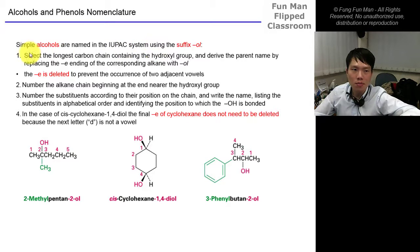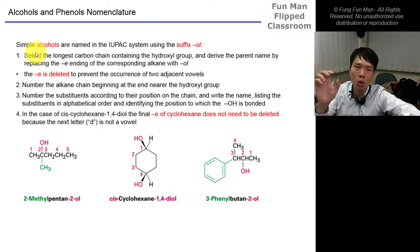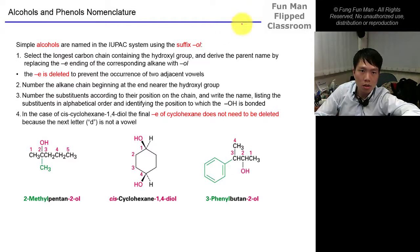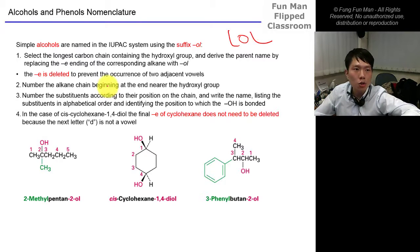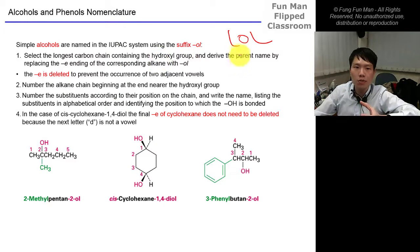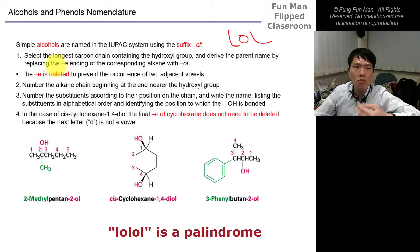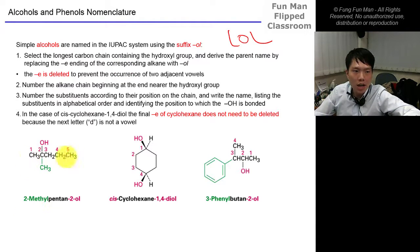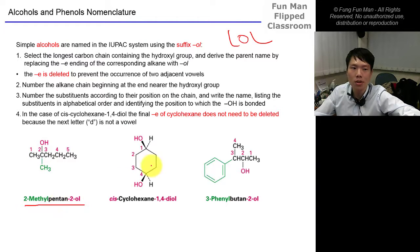In the IUPAC system, all alcohols must end with -ol. We select the longest carbon chain containing the hydroxy group (OH), and derive the name of the parent by replacing the -e ending of the corresponding alkane with -ol. For example, the longest chain here has five carbons with the alcohol — this is pentan-2-ol, with a substituent at the second position, so it's 2-methylpentan-2-ol.